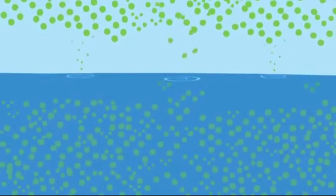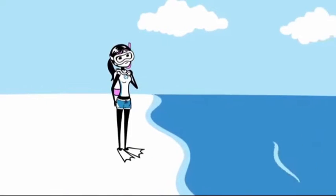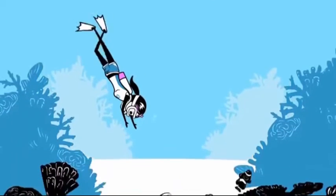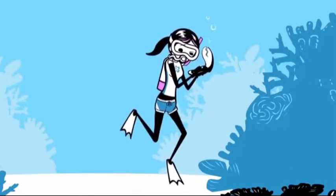And with all that CO2 in the sea, scientists are shedding light on an ocean of problems. Ready for the first big problem? Some sea creatures like clams, oysters and coral, their shells and skeletons are getting weaker.